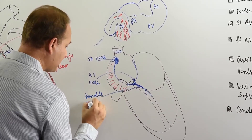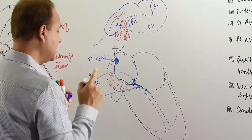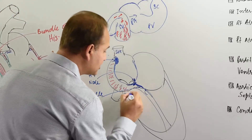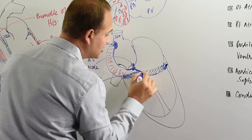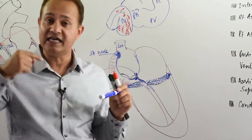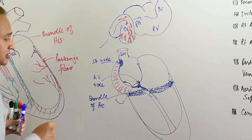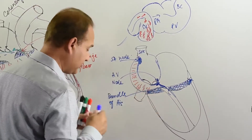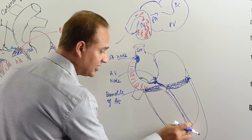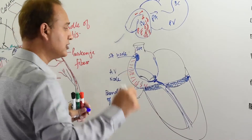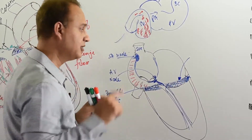The bundle of His develops with the AV node, and both are also formed from the sinus venosus. Meanwhile, a fibrous ring also develops, insulating the atrial and ventricular muscles so that electrical impulses cannot leak between them. If they do, that is a pathological condition. The bundle of His goes into the interventricular septum and divides into two bundle branches, which then become Purkinje fibers.